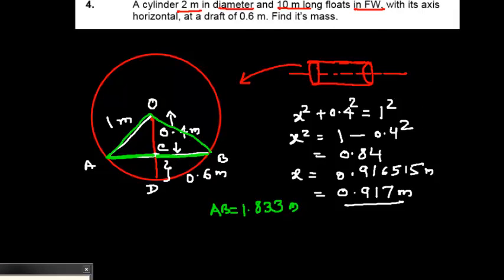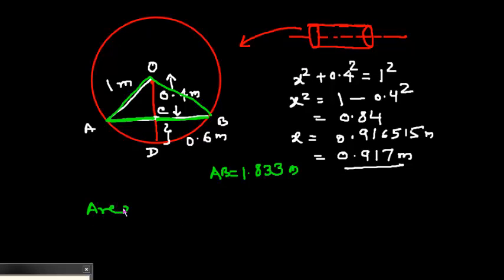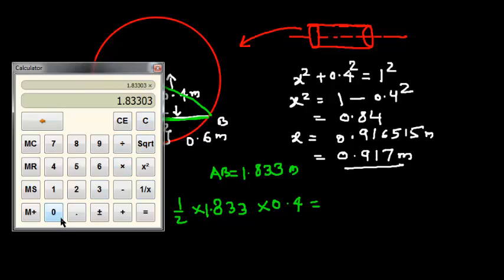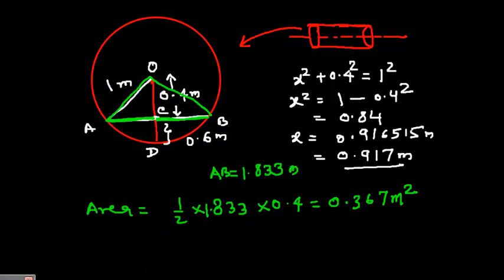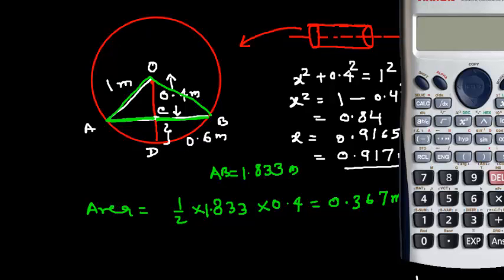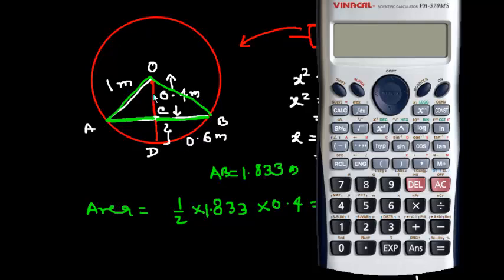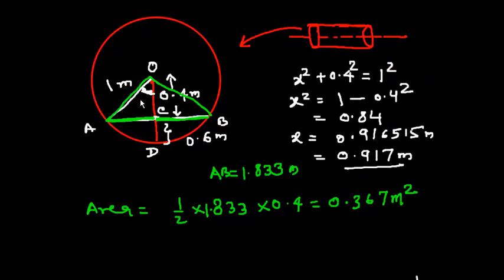Area of triangle AOB = half × base × height = (1.833 × 0.4) / 2 = 0.366 or approximately 0.367 square meters.